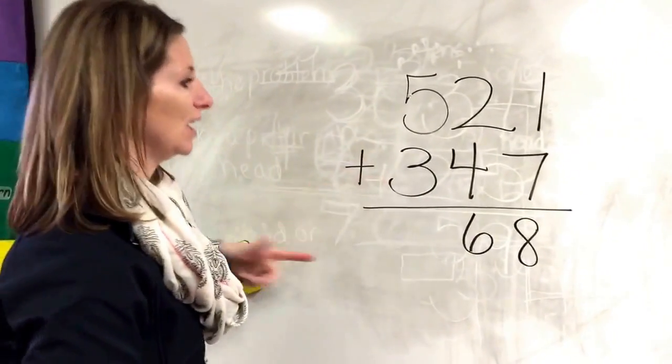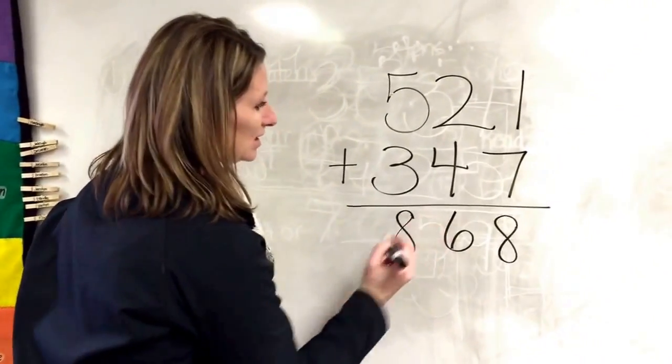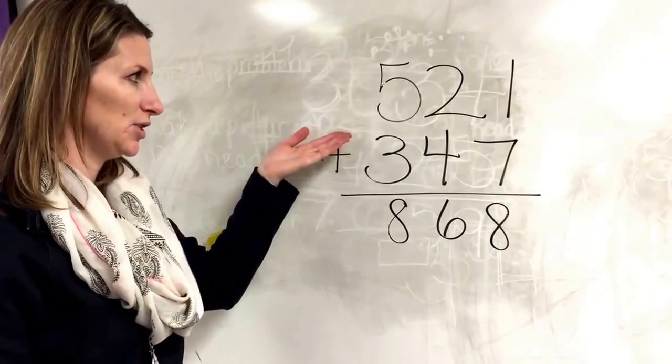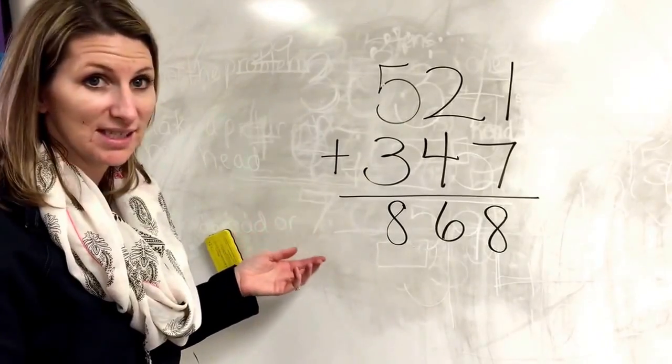Five, six, seven, eight. Five plus three is eight. So now I have solved 521 plus 347, and the answer is 868.